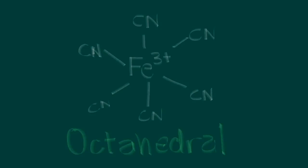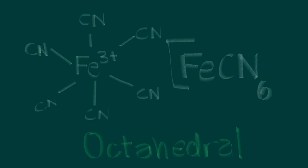This is what an octahedral complex looks like if iron three is bonded to six cyanide ligands. But what would be the charge on this particular complex? Because the central atom is Fe three positive, when six CN⁻ are associated with it, the net charge becomes six negatives plus three positives.